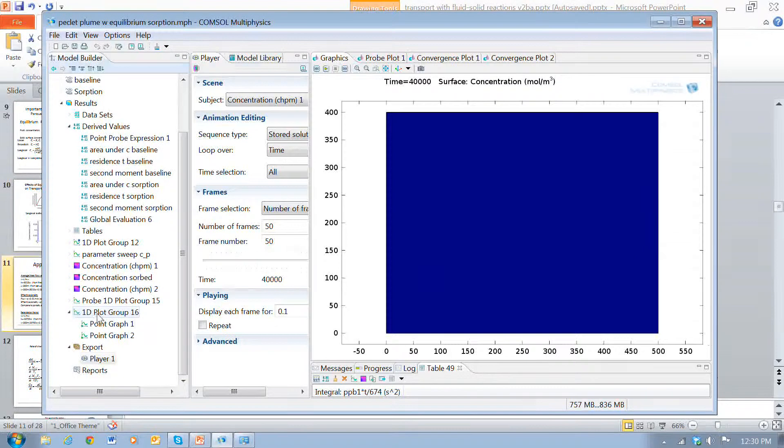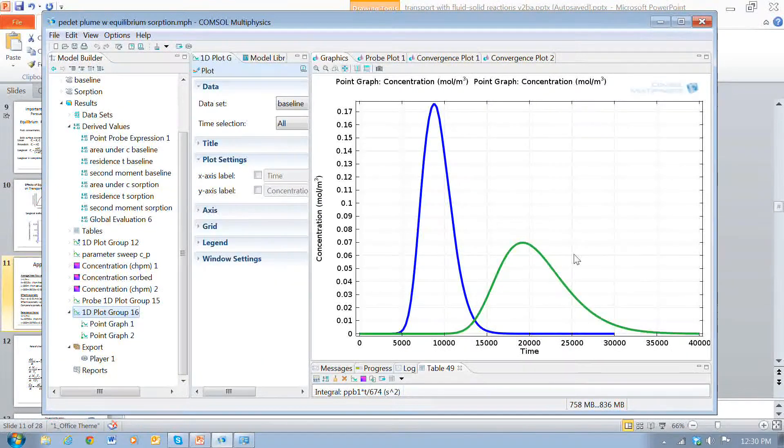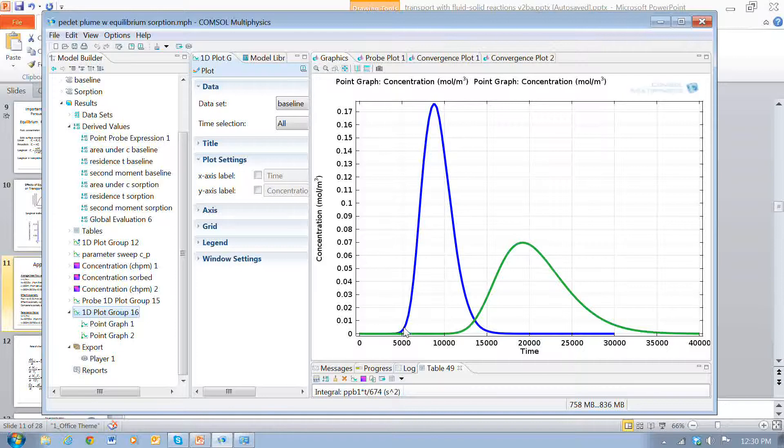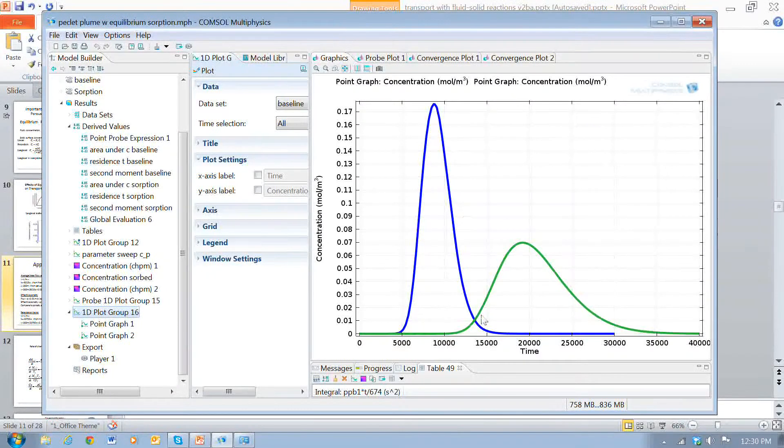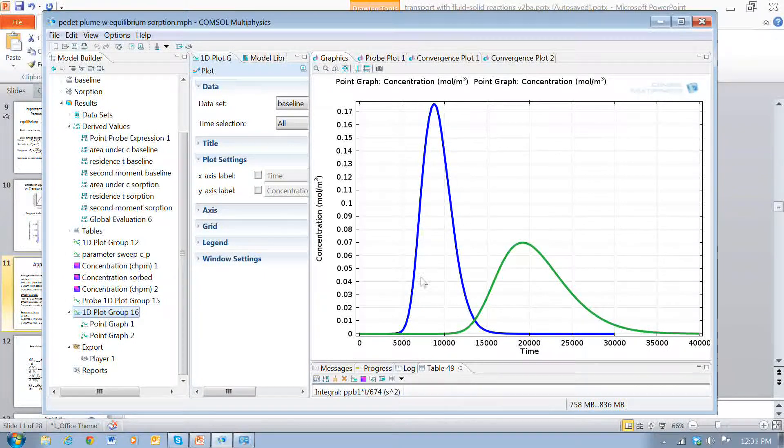And so here's some plots of the concentration as a function of time at a point that's downstream from the release point of the pulse. A conservative tracer would look like this, this blue curve, and this was done by using a compound that had zero sorption. So the concentration increases, reaches a peak, and drops off, and it's spread out like this because of dispersion.